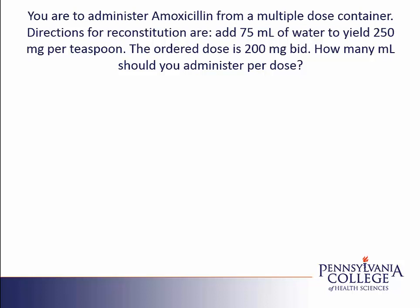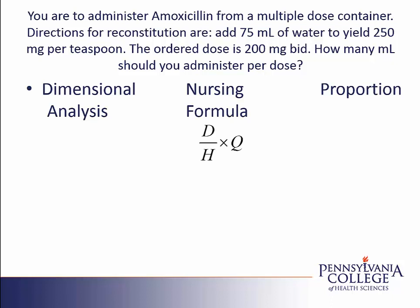Since it is a dosing problem, we can solve this problem in one of three ways. No matter which way we choose, we want to look through the problem to figure out what has been ordered and what is available to us. The ordered dose is in the second to last sentence — it is 200 milligrams twice a day. We'll administer just the 200 milligrams, one dose at a time. The available amount is 250 milligrams per teaspoon.